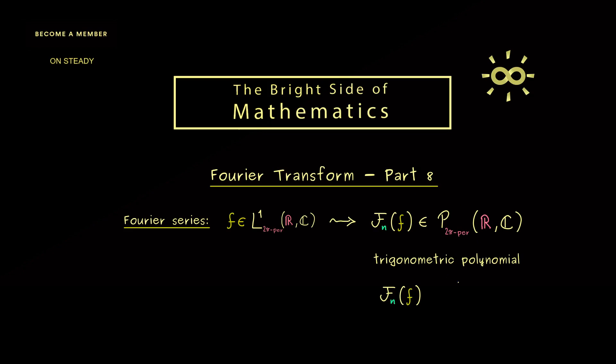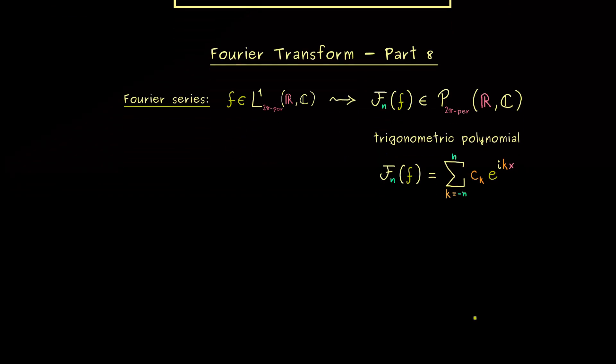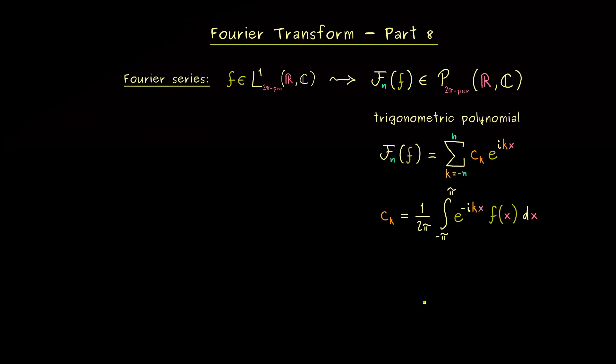Moreover, we know the best way to write it down is to use exponential functions, because then it's just a sum from minus n to n with c_k e to the power ikx. And the complex numbers c_k are the Fourier coefficients, which are easy to remember in this form. Namely, it's just 1 over 2π and then we have the integral of f, where we also have e to the power minus ikx inside.